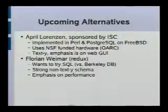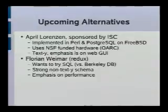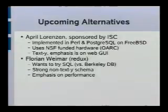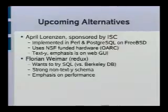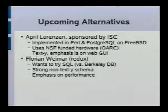We have asked April to look into a passive DNS implementation that would be based on SQL. Florian's work is very interesting, but it was written in GNU ADA and uses Berkeley DB. Florian himself wants to try the SQL approach. They both have computers in the rack where you can see the passive DNS data that we're currently collecting.